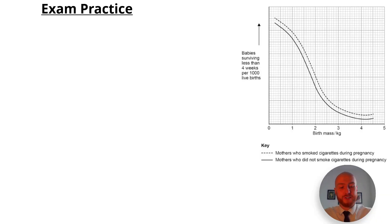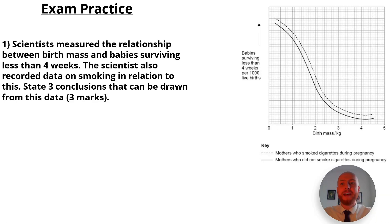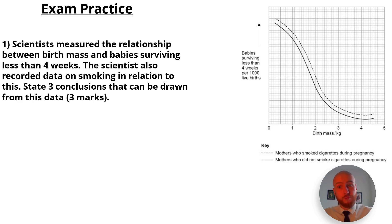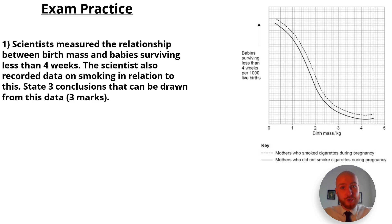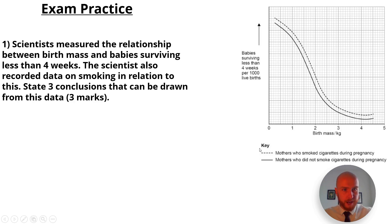Let's get into some exam practice. Question one: scientists measured the relationship between birth mass and babies surviving less than four weeks, and also recorded data on smoking in relation to this. State three conclusions that can be drawn from this data. This question is worth three marks — pause the video, analyse the graph, and have a go before we go through the answer.